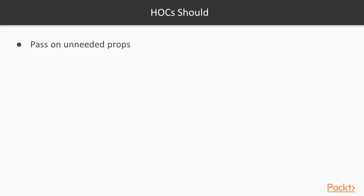Higher order components should in general pass on unneeded props to the wrapped component. So basically if we have a wrapped component and a higher order component function around it, every prop that we get we should pass on to the inside component. This is useful because if a higher order component doesn't care for a specific prop, then we should pass it on so the inside component can use it if it needs.